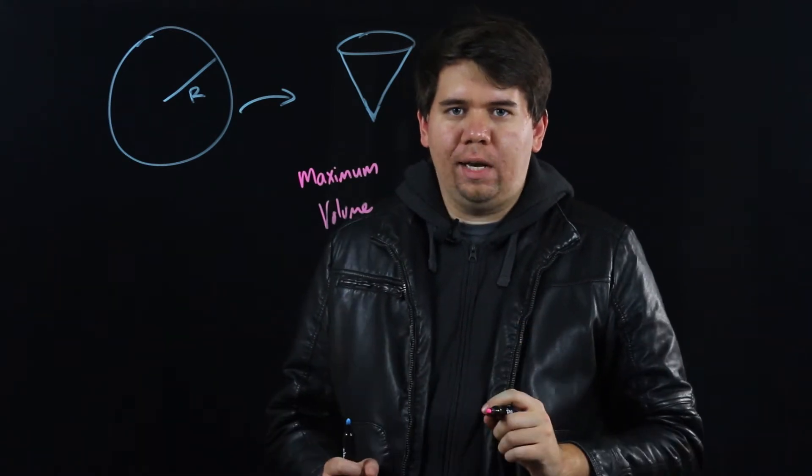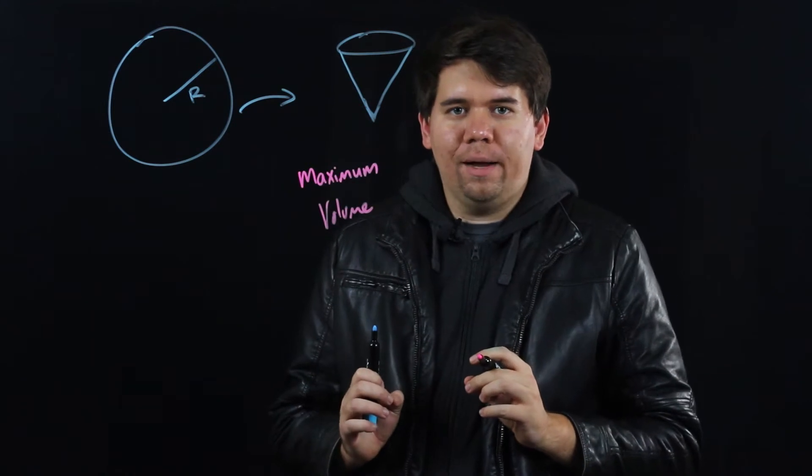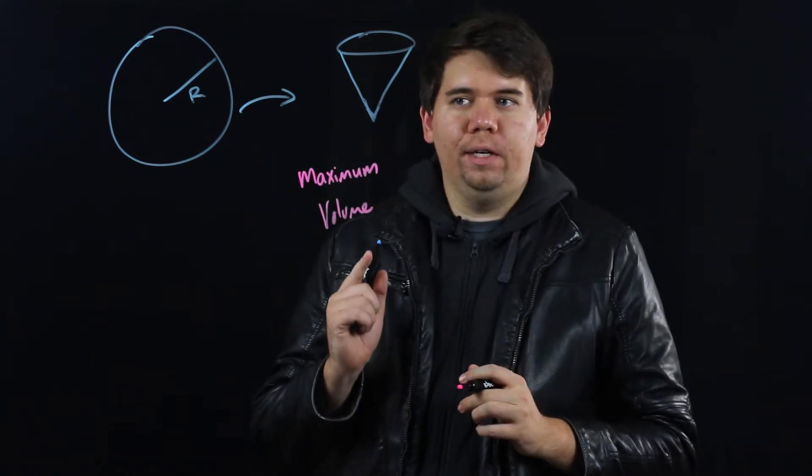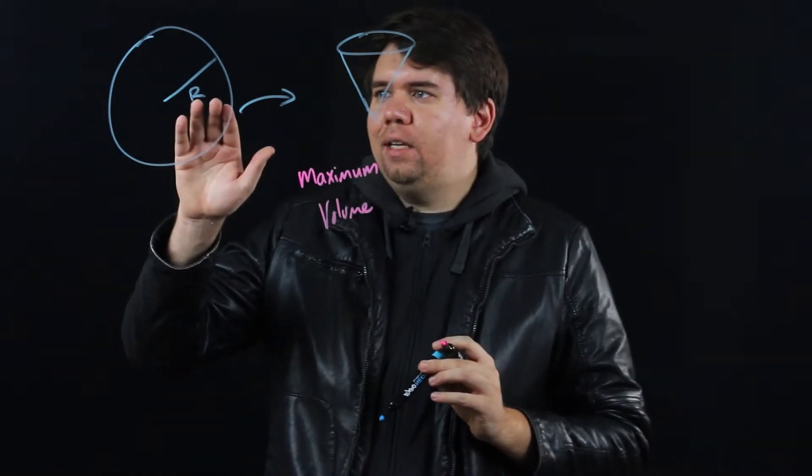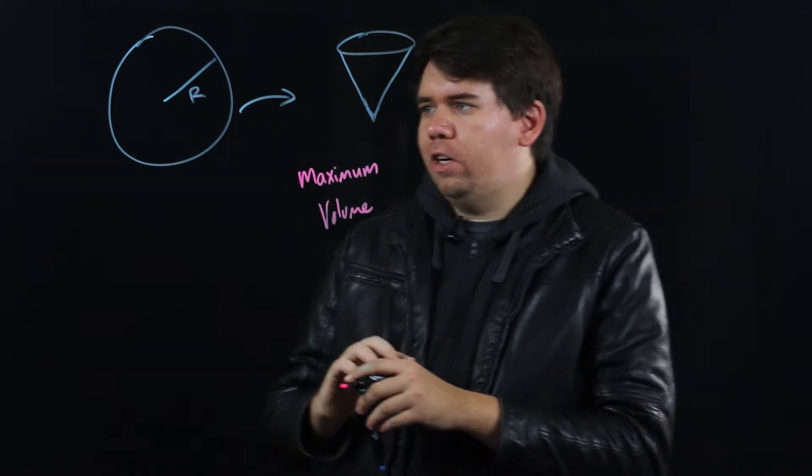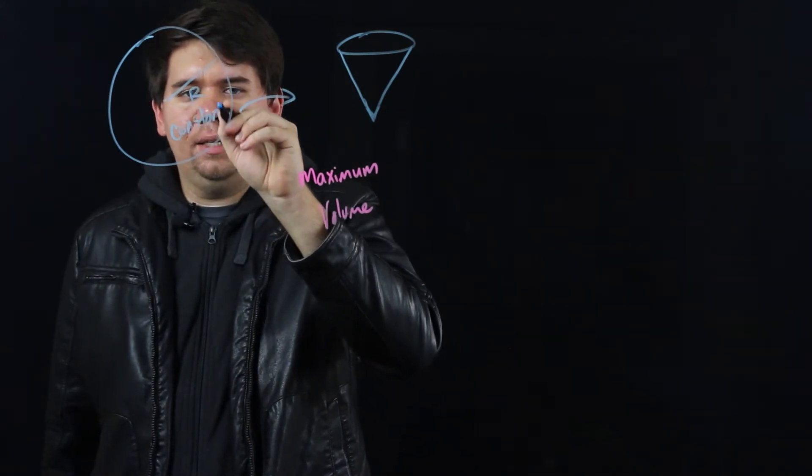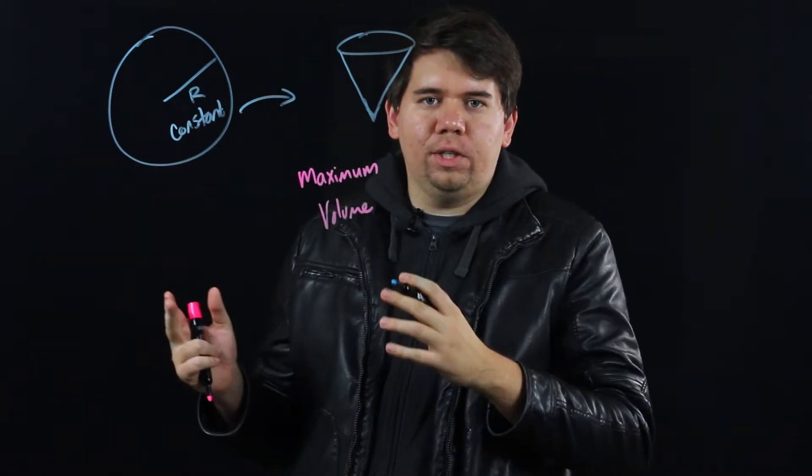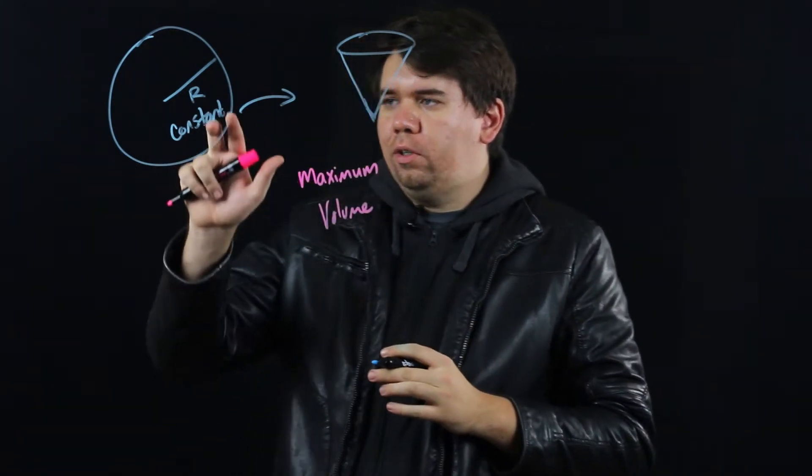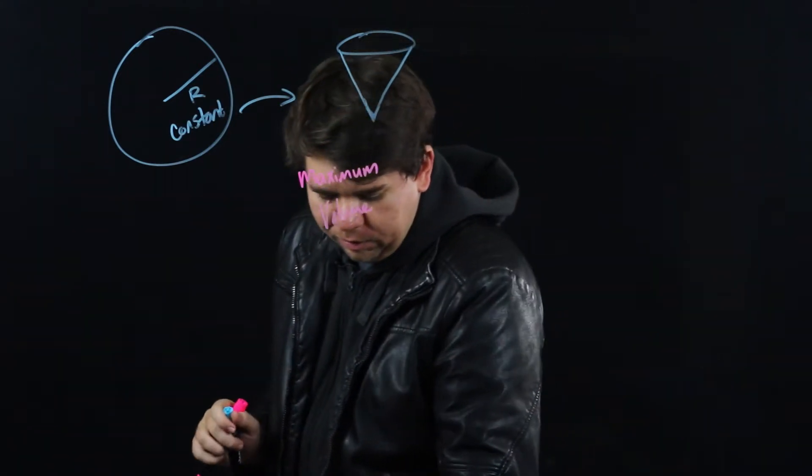We know the general strategy. We want some expression of volume that we're going to try to get down to be just a function of one variable. Here we're solving it in the general case for any given r. So just treat r as a constant. You might be in some particular case where your r is 1 inch or 5 inches or 12 inches. But in general, we're just going to treat some r as a constant.